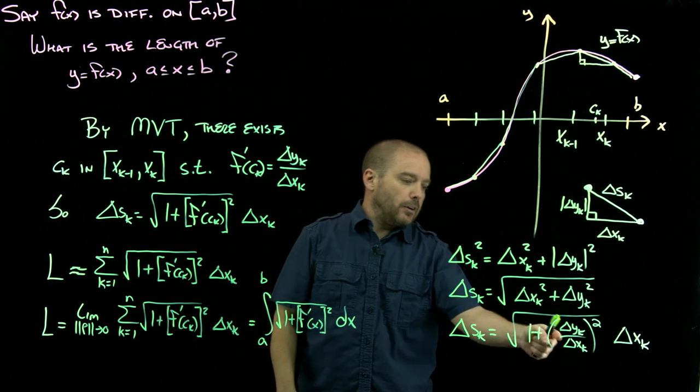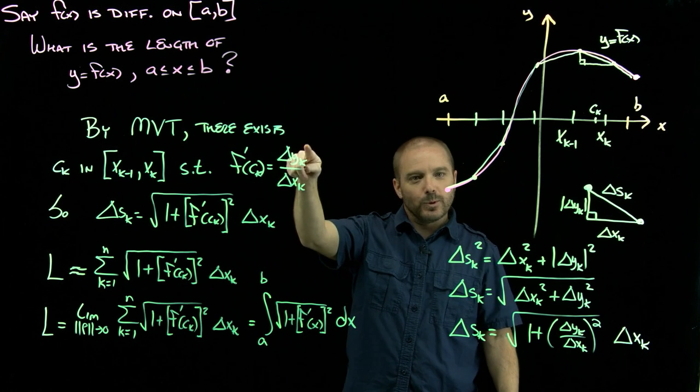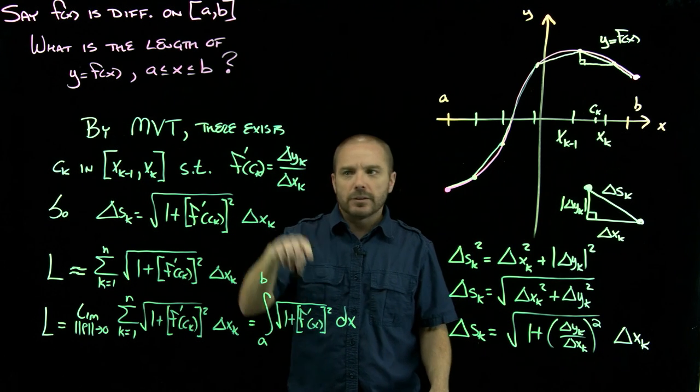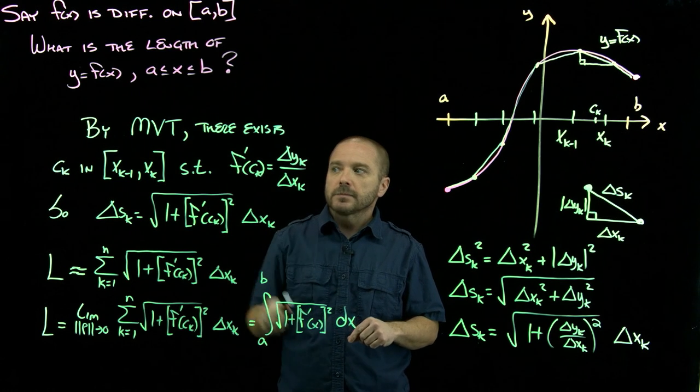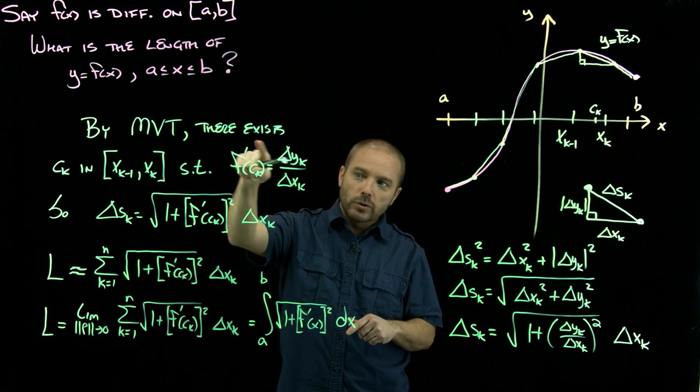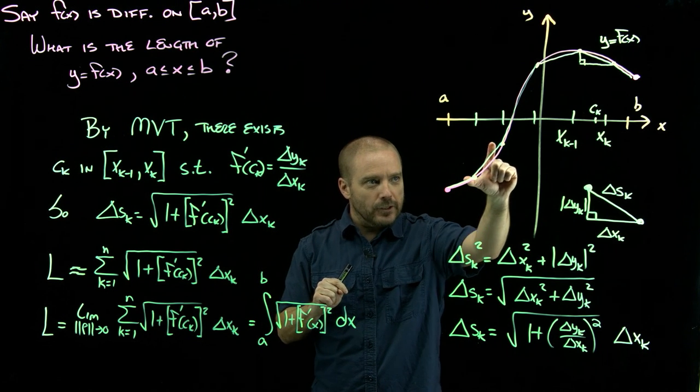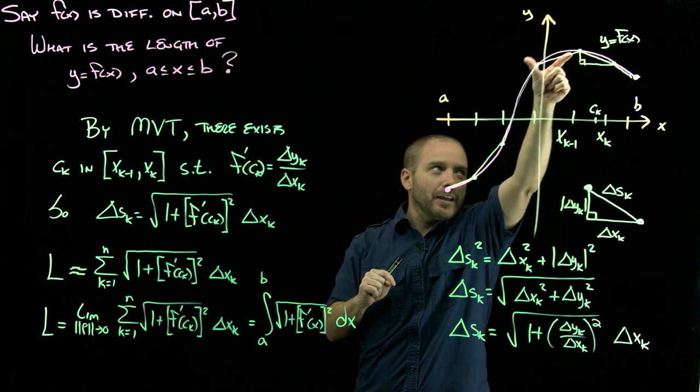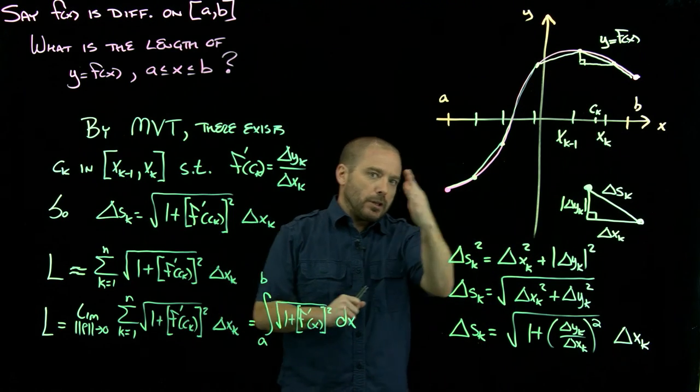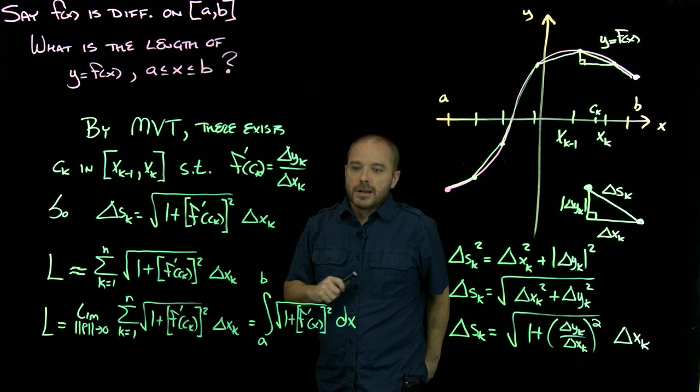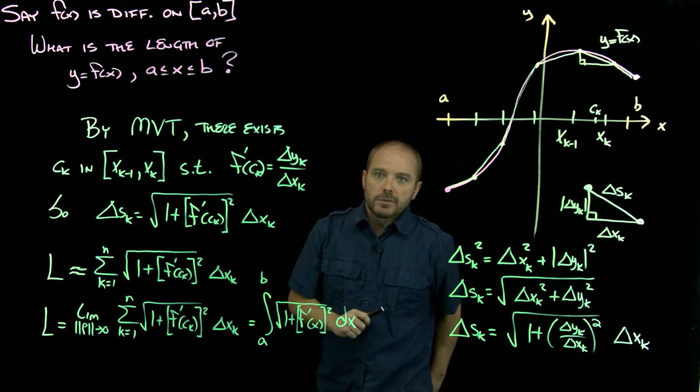The only reason that we could guarantee that there was going to be some point where the derivative was equal to the slope of the secant line was by mean value theorem, and that is only true if the function is differentiable on that subinterval. So it has to be differentiable on the entire interval from a to b. But now we have the length of a curve expressed in terms of an integral.